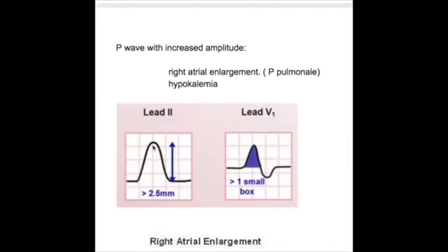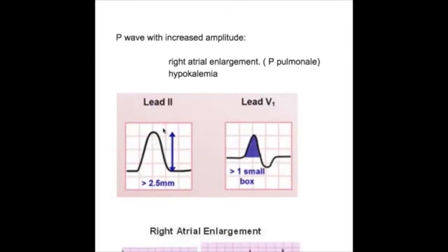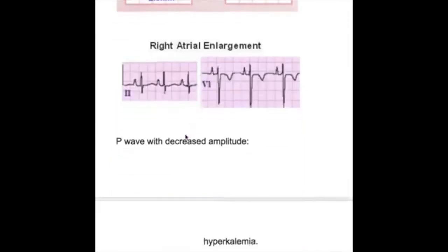Acyanotic congenital heart diseases: ASD, VSD, PDA. When the shunt reverses and produces pulmonary hypertension, it produces right atrial hypertrophy and amplitude of the P wave is increased. So this is the right atrial enlargement.